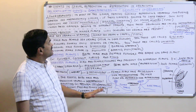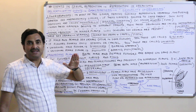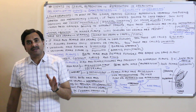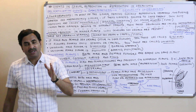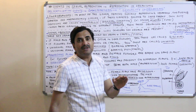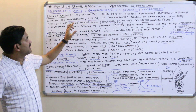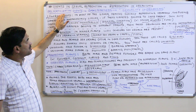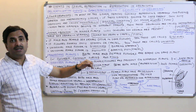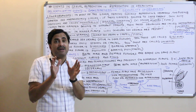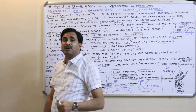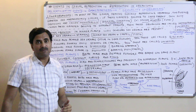In pre-fertilization events we have studied gametogenesis — isogametes and heterogametes — and the type of cell division which occurs during gamete formation. Today we are starting with sexuality in organisms, which is the most important section of this chapter, 'Reproduction in Organisms.' You must be very clear about these terminologies because they will appear in further topics in this chapter as well as in Chapter 3, Human Reproduction.